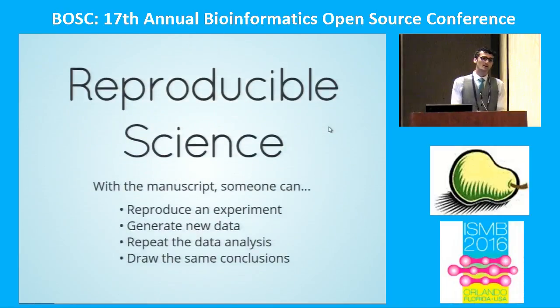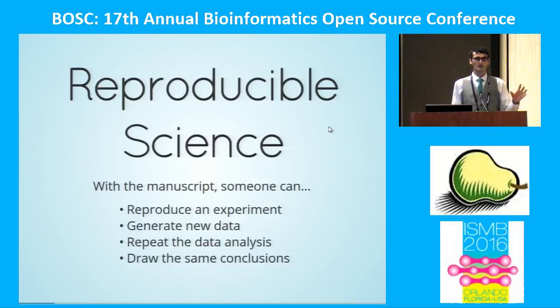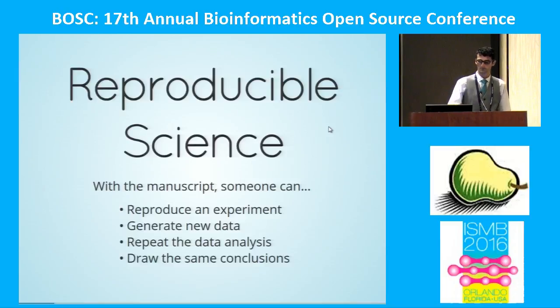Reproducible science means that a scientist can read a paper, repeat the experiment, generate new data, analyze that data, and come to the same conclusions as the original author.